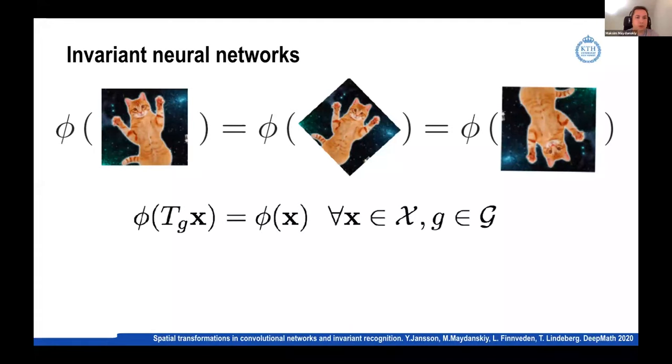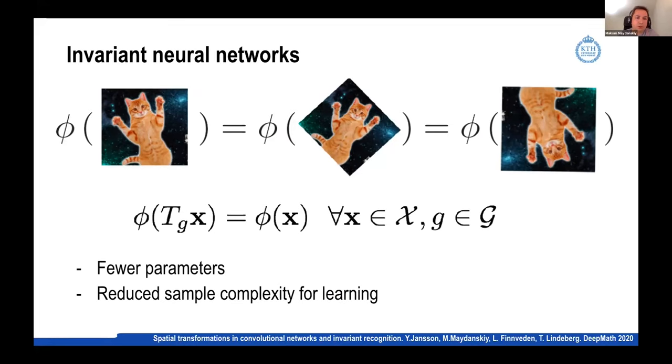So invariant neural networks here denoted by this phi is just something that takes in a signal, in this case an image, and outputs a collection of signals or features that we then use for downstream tasks. And it will be invariant precisely when if you apply some transformation to the inputs, here it's a rotation, we take our image and rotate it, the result is the same as before and after transformations. So here in the formula, x is some kind of input and G is an element of some group of transformations. And the TG is the particular transformation that we are considering. So the advantages of neural nets that are invariant is that they have fewer parameters and they don't require as much complexity for learning. So you might not need to do data augmentation by artificially introducing these transformations.